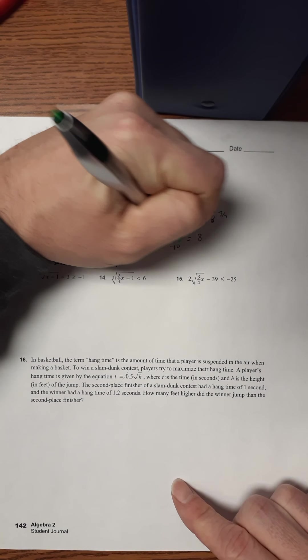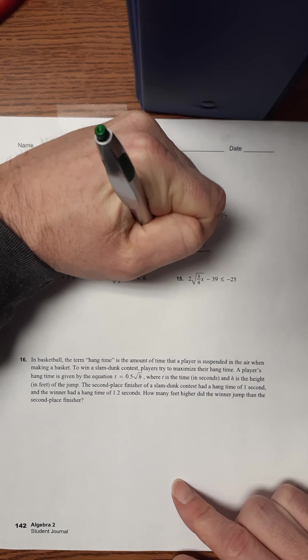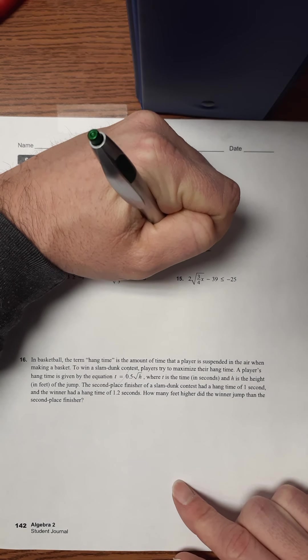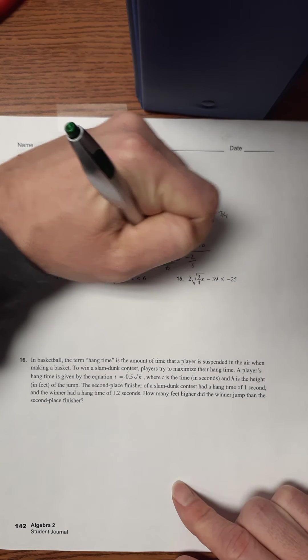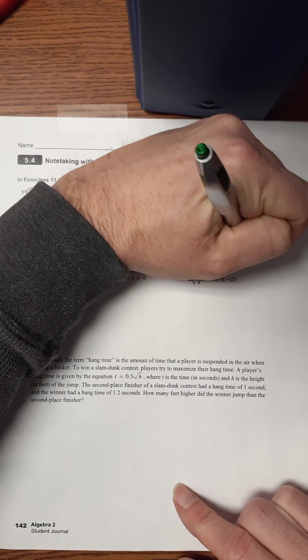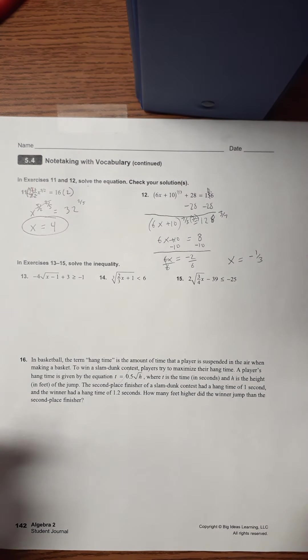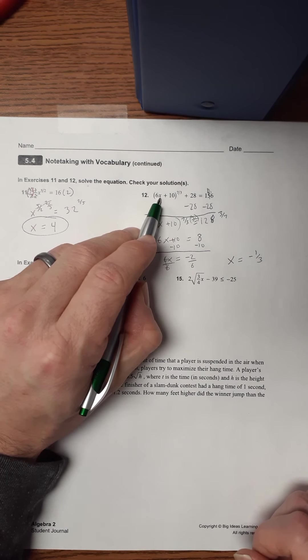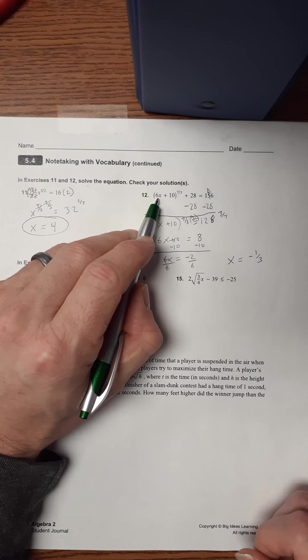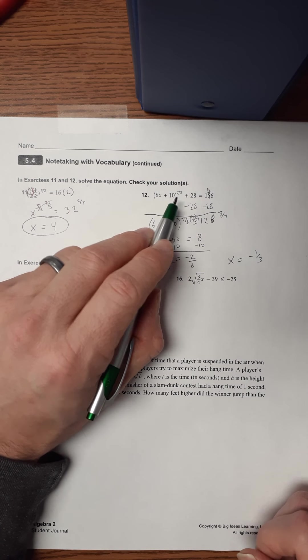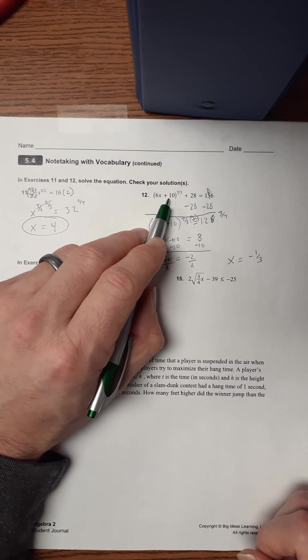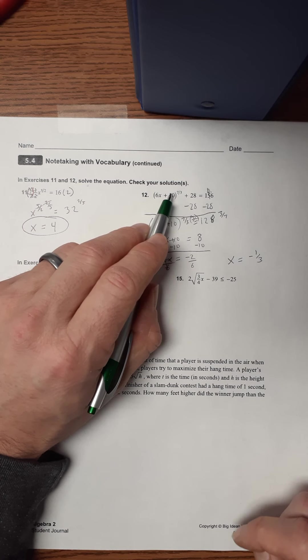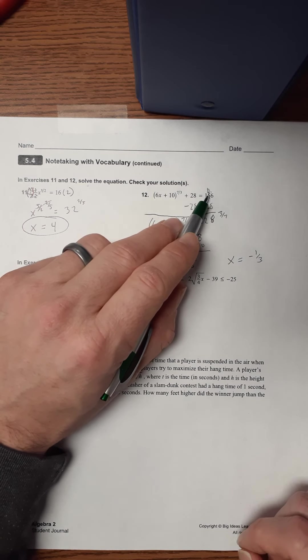So now we've got minus 10 minus 10. 6 X equals negative 2 divided by 6. So X we suspect equals negative 1 third. We need to make sure. So let's do that real quick. So negative 1 third times 6 would be negative 2. 10 minus 2 would be 8. The cubed root of 8 is 2. 2 to the 7th power is 126. 126 plus 128 is 156. That does check out. Very good.